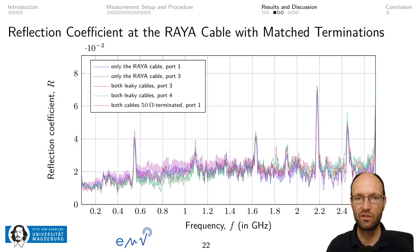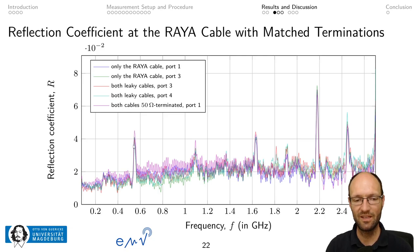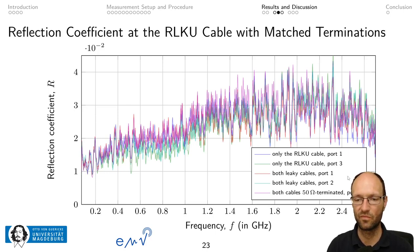Looking at reflection coefficients: the reflection coefficient at the RAIA cable is quite small — the maximum value is around 0.07. There are some periodic peaks, probably because the small apertures spaced at periodic distances along the cable are inhomogeneities, each causing a small reflection that adds up at certain periodic frequencies. Despite these peaks, the cable is very well matched. The RLKU cable is even better matched and does not show these periodic peaks. The results agree very well between the different measured configurations, which makes sense.